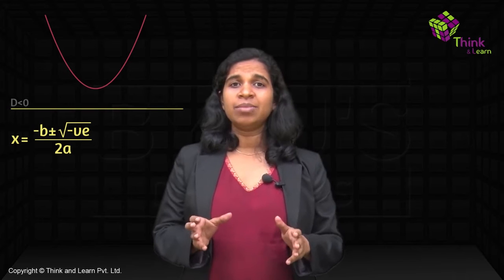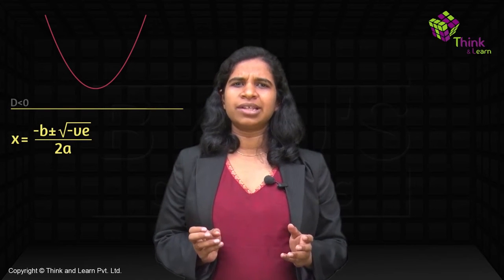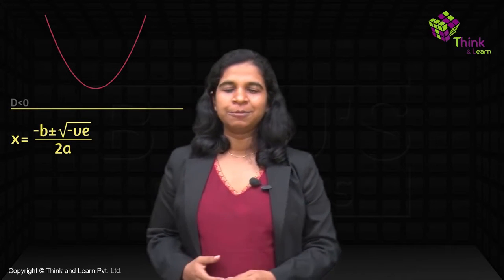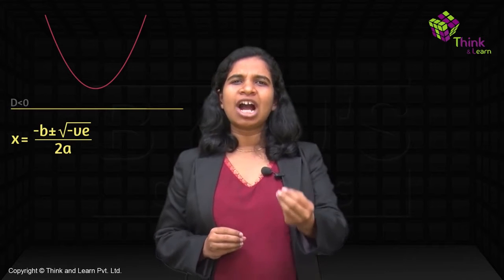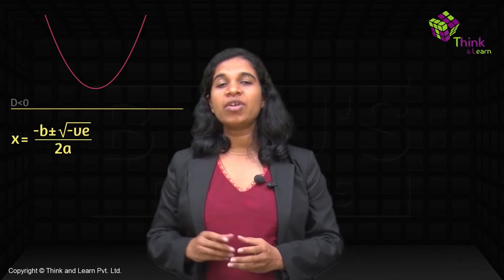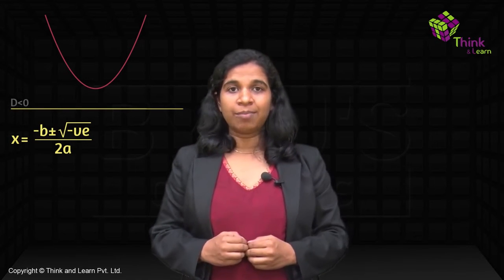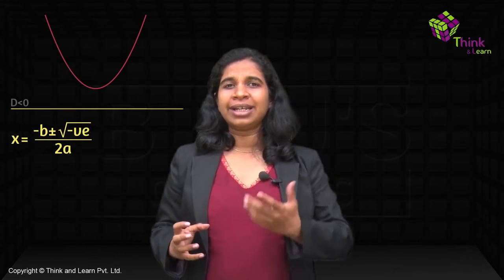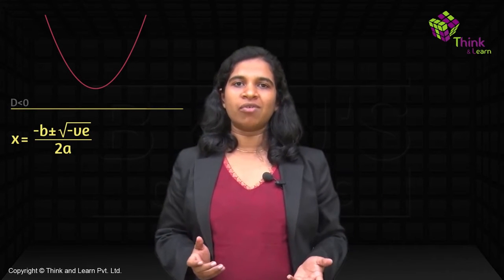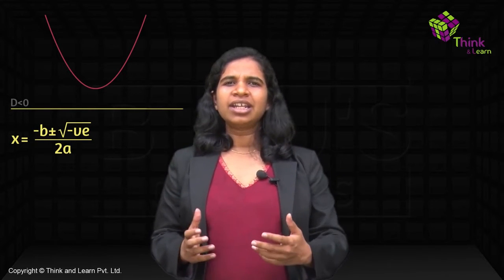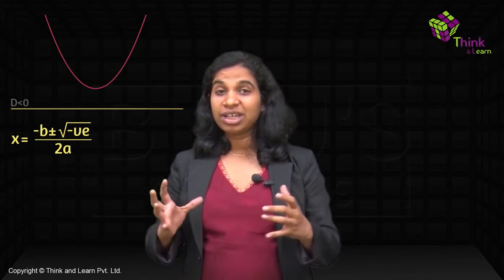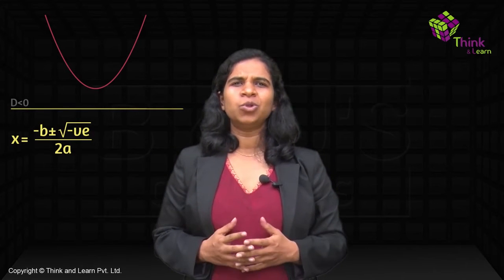Even negative numbers didn't make sense historically — what does it mean to have minus one apple? You can't have less than zero apples. But mathematically, when solving problems, they encountered situations requiring negative numbers. Now we can ascribe meaning to them: if your bank balance is minus 500 rupees, it means you owe the bank 500 rupees. So we started accepting negative numbers.